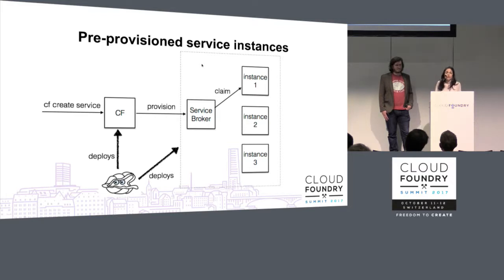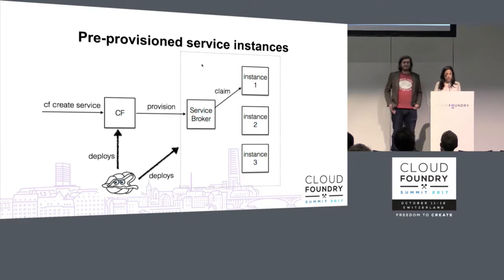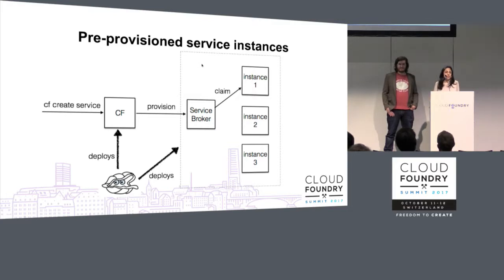There are some advantages to that approach. The cost is fixed, so we know in advance how many VMs we're provisioning and what bill we'll be paying. Provisioning times are also quite quick because there are no VMs to spin up. However, pre-provisioned instances cost money while doing nothing until claimed. They're not configurable - they're all exactly the same. It's hard to scale them up because it means redeploying the whole ecosystem of the broker and the pool. And finally, it's near impossible to scale down safely.